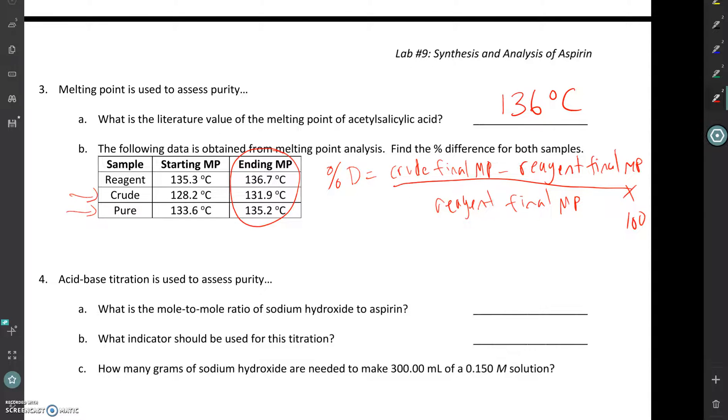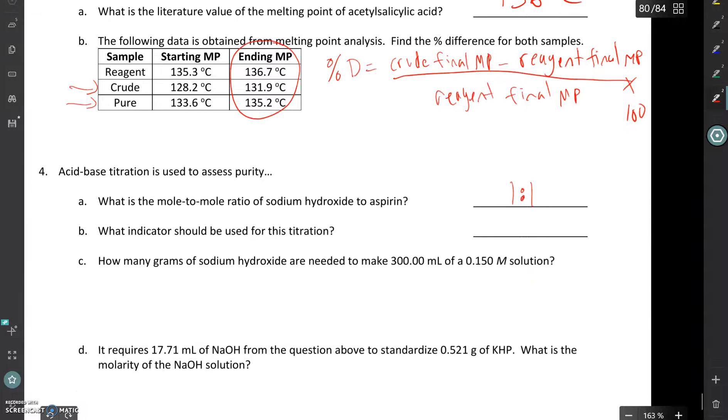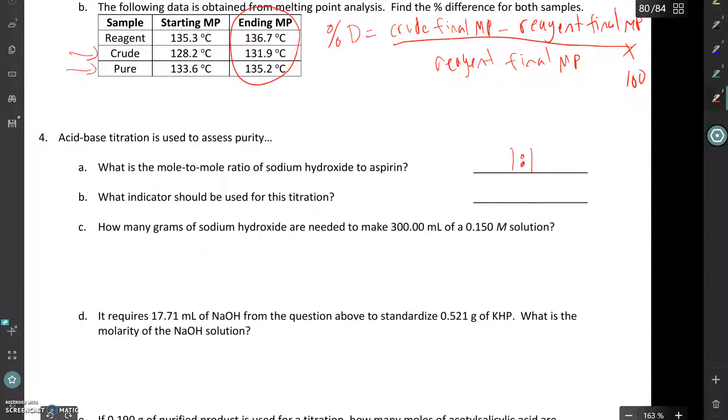We're going to be using an acid-base titration to assess purity as well. So if we were to write out a reaction, the mole ratio of sodium hydroxide to aspirin is one to one. For every mole of sodium hydroxide that you use to titrate there must have been a mole of aspirin present. Sodium hydroxide is a strong base.